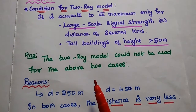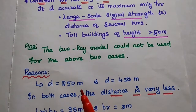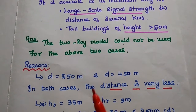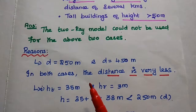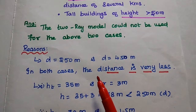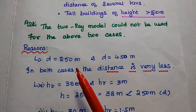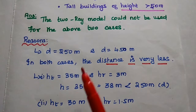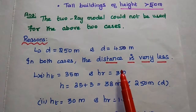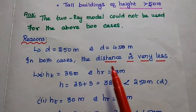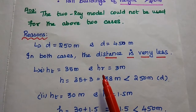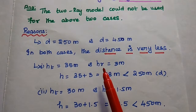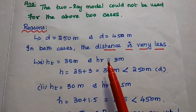So, here in this given problem, the answer is that the two-ray model could not be used for the above two cases. The first reason is that the distance between the transmitter and receiver is 250 meters in the first case and 450 meters in the second case. In both cases, the distance is very less — it is in terms of hundreds of meters. But the two-ray model is applicable for large-scale signal strength over a distance of several kilometers.